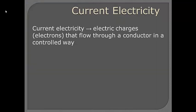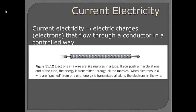Just a quick reminder from grade 9 that current electricity is just electric charges or electrons that are flowing through a conductor. It behaves kind of like marbles in a tube. If you're going to push one at one end of the tube, the other one instantly comes out the other side. That is how current travels through a conductor.